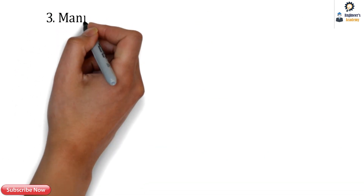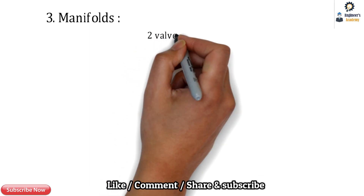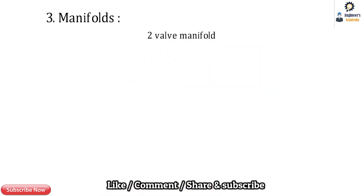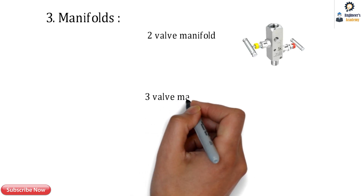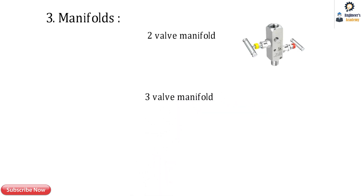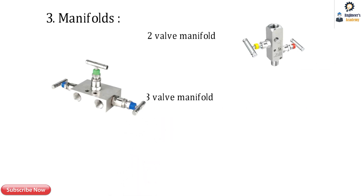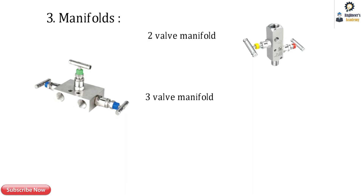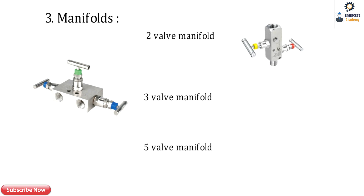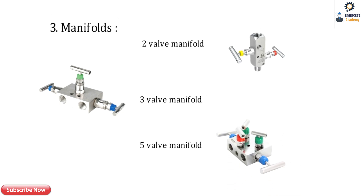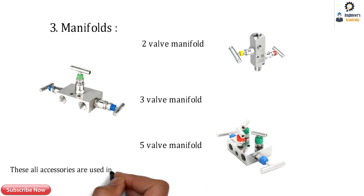Moving ahead, the next topic is manifolds. There are three types: the first is the two-valve manifold having two valves, similar to the needle valve but with two valves; the next is the three-valve manifold with three valves; and then the five-valve manifold with five valves. All of these accessories are used with pressure gauges, pressure transmitters, and differential pressure measurement units.